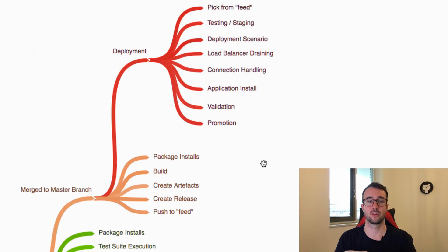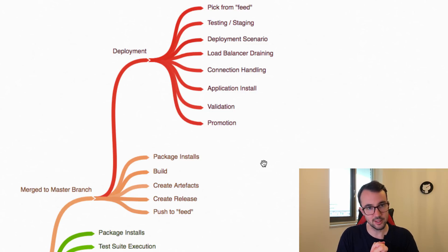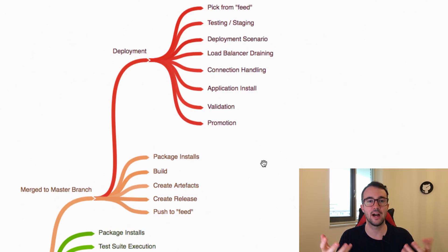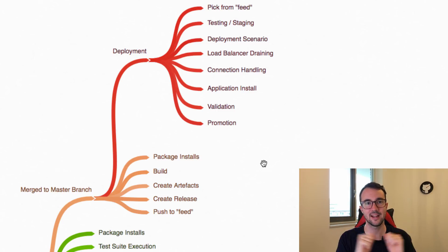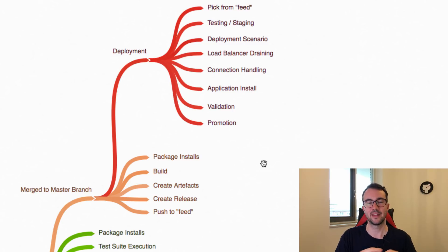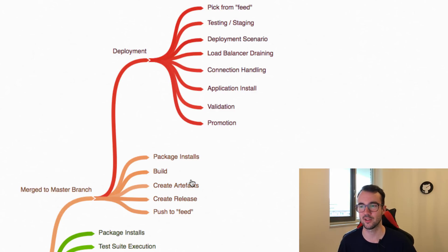Whatever framework, library, or language you're using will have different ways of building an application. We build it and then create an artifact — essentially the output of that build. The artifact is a final zip file containing everything needed for the application to run. We create a release from that with a version and a name, then push it to a feed or upload it to a location that serves as the handoff point between the CI aspect and the CD tool.